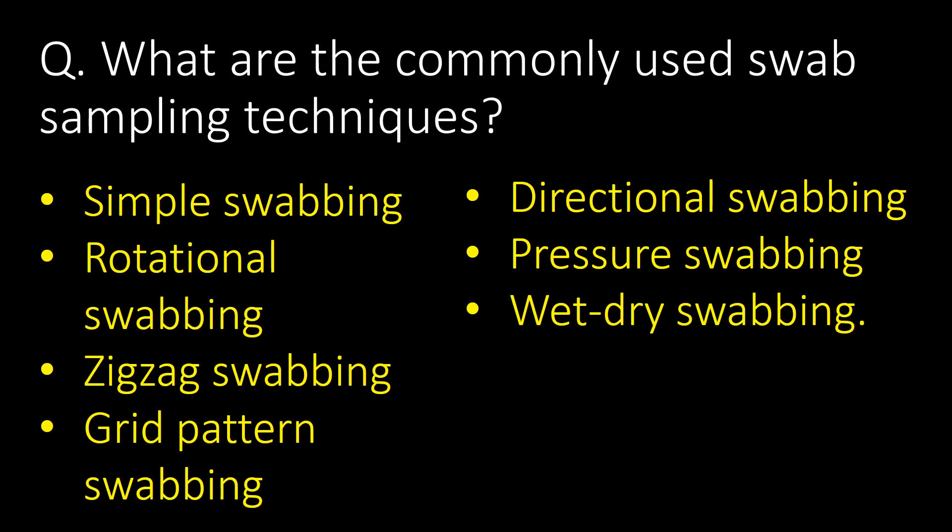Now we will see some basic and important questions about rinse and swab sampling techniques in the pharma industry. First question: What are the commonly used swab sampling techniques? Simple swabbing, rotational swabbing, zigzag swabbing, grid pattern swabbing, directional swabbing, pressure swabbing, and wet-dry swabbing are the commonly used swab sampling techniques in the pharma industry.